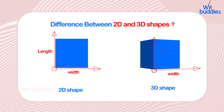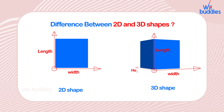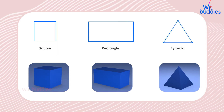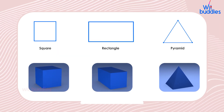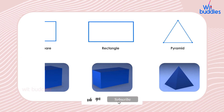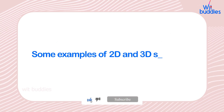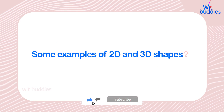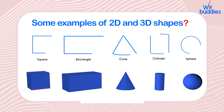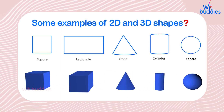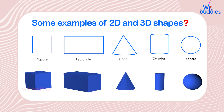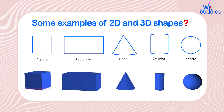A 3D shape has length, width, and height. 3D shapes are obtained from the rotation of 2D shapes. Some examples of 3D shapes are a square, rectangle, cone, cylinder, sphere, and so on.